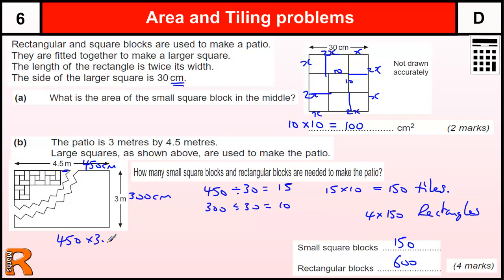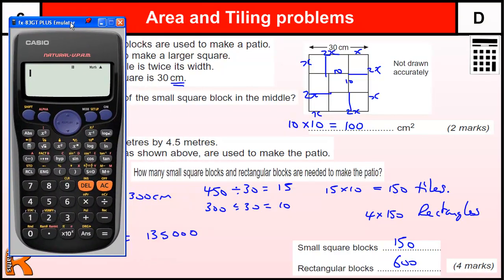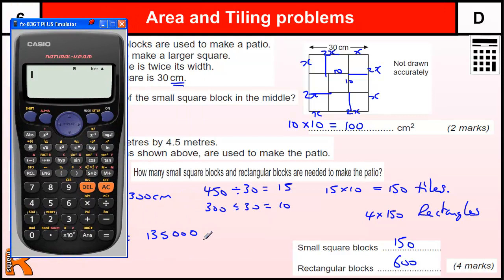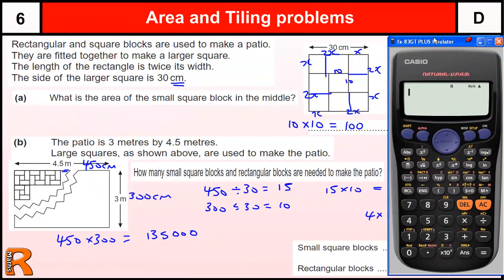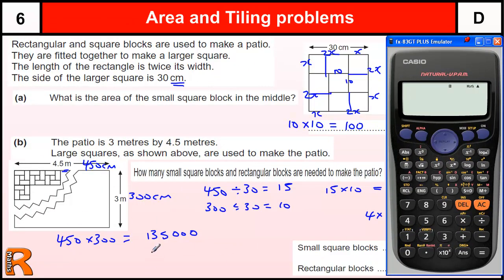So if you do it by 450 times 300, then you're going to get 135,000. OK, let's bring in the calculator. So we've got that area, let's try to do the 30 times 30 just to make sure. And that gives us 150. So it tells us 150 tiles, and then we can work out the number of rectangular boxes by times and by 4.